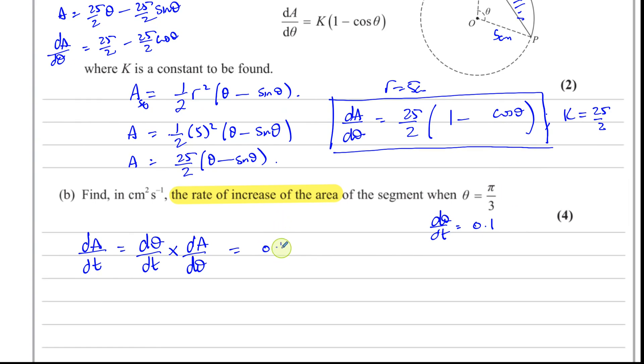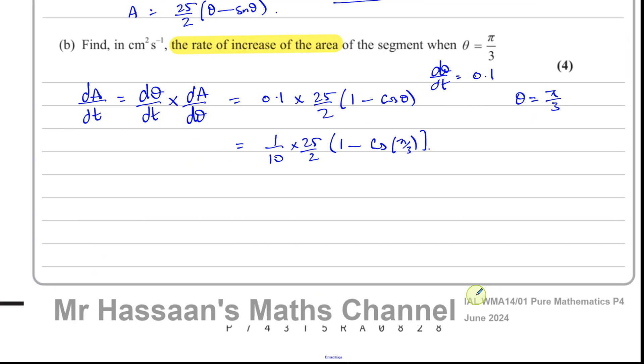So this is going to be 0.1 times dA/dθ, which is 25/2 times 1 minus cosine theta. And they've told us to find this when theta is equal to pi over 3. I've got to replace it with pi over 3, and I'll get my answer. So 0.1, which is, let me just write that as a fraction. That's going to be 1/10 times 25/2 times 1 minus cosine of pi over 3. Now, the cosine of pi over 3 is a half. Because cosine of 60 degrees is a half. That's right. That's a half.